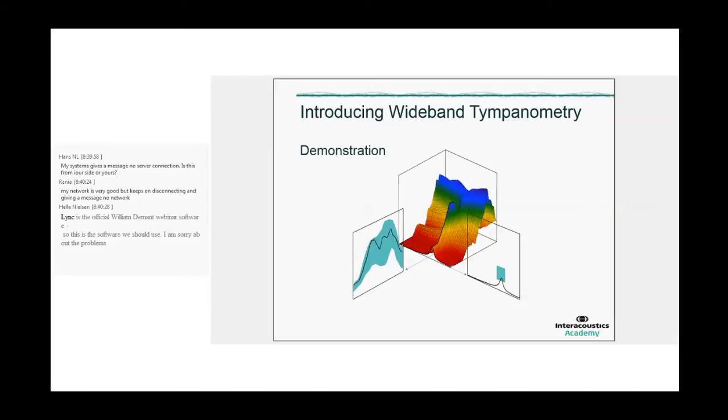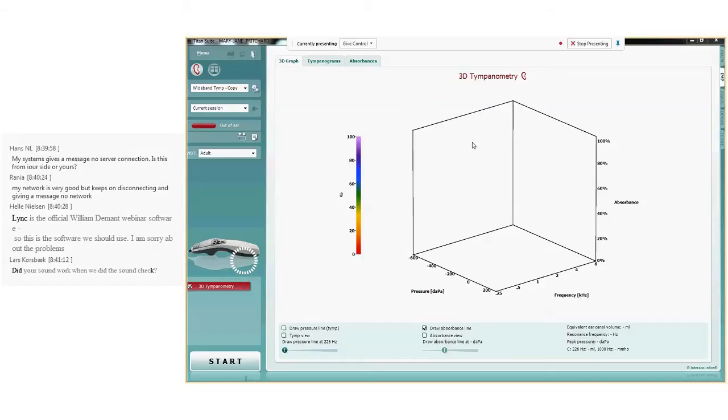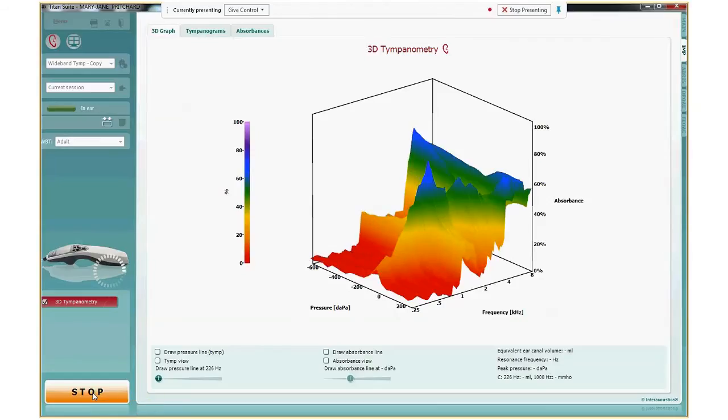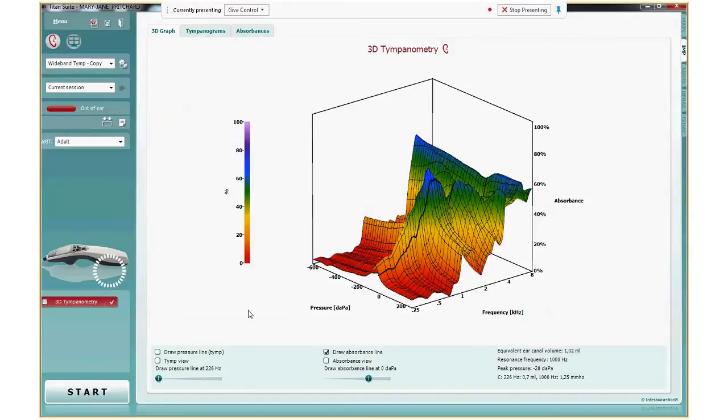So let's look at the real measurement. I now need to switch to my monitor. Now I need to find the probe of my Titan and put it in my ear. The probe is now going in my ear. We can see the status became in ear. I will now press the start button in the software. And of course I had to be quiet during the measurement.